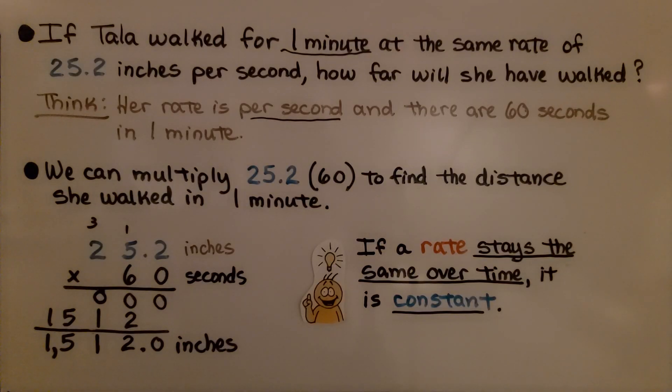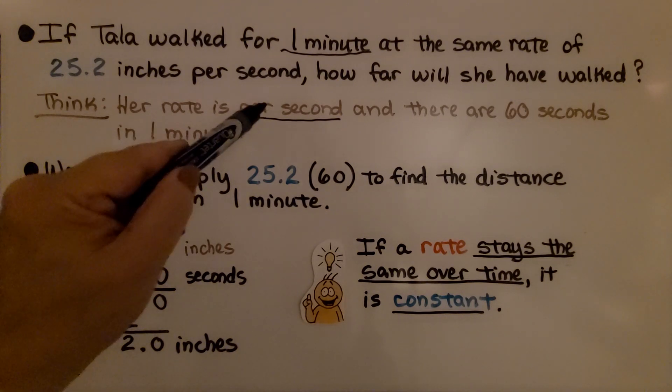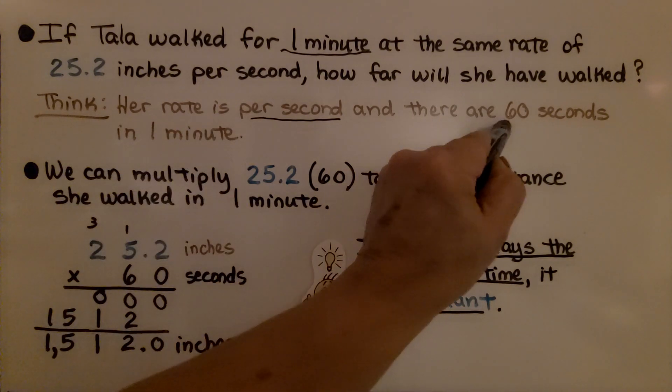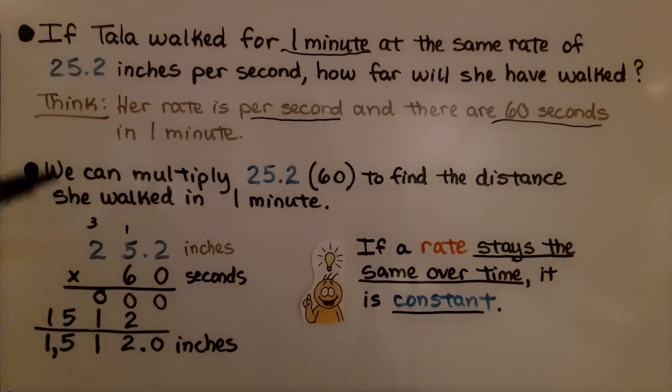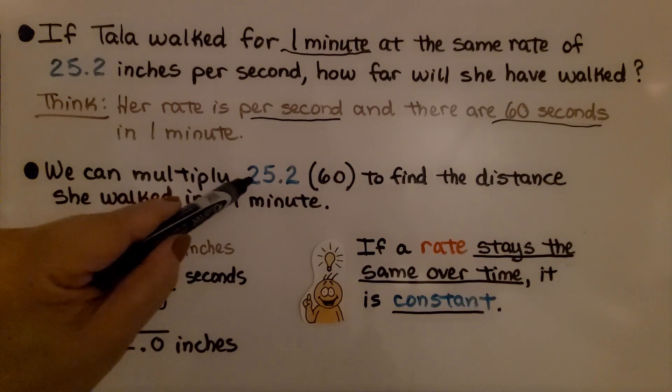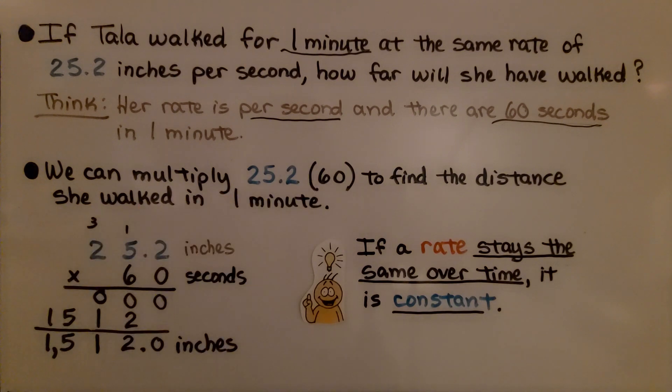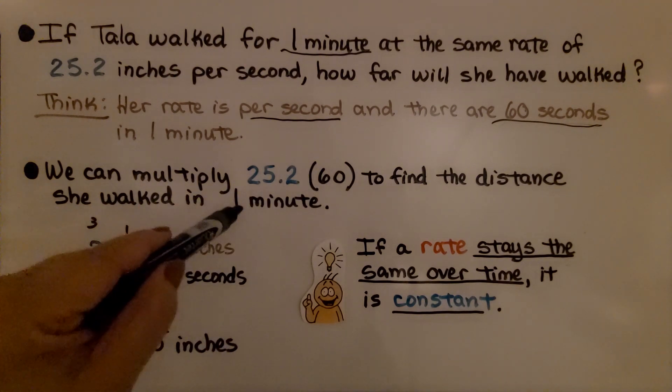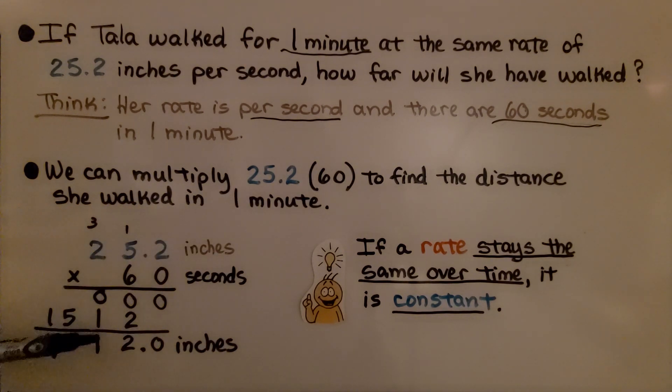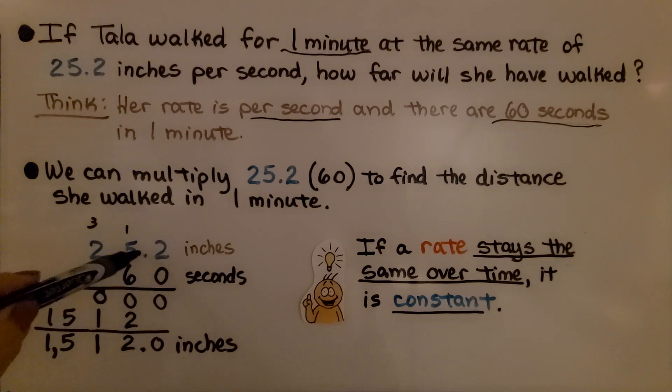If Tala walked for one minute at the same rate of 25.2 inches per second, how far will she have walked? Her rate is per second. There are 60 seconds in one minute. So we need to multiply 25.2 times 60 to find the distance she walked in one minute. We do our multiplication. We have one hop in the problem, so we're going to put one decimal hop into our product. We have 1,512 inches.